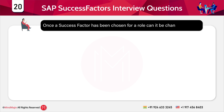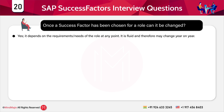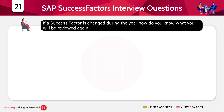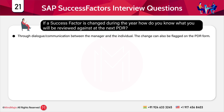The next question is: once a success factor has been chosen for a role, can it be changed? Yes — it depends on the requirements or needs of the role at any point in time. It is fluid and flexible, so it may change year on year. If a success factor is changed during the year, the change can be flagged on the PDR form through dialogue between the manager and the individual.